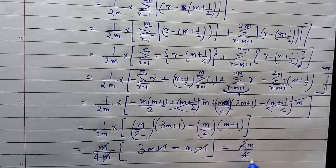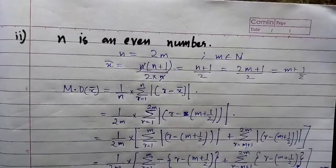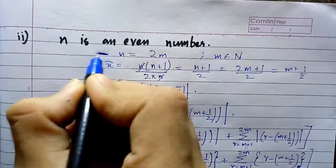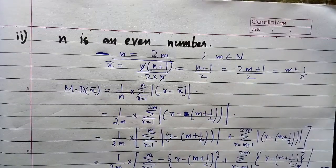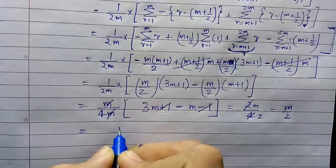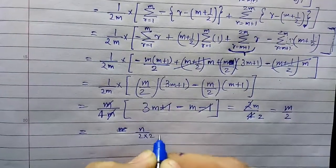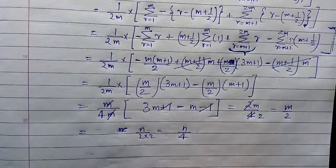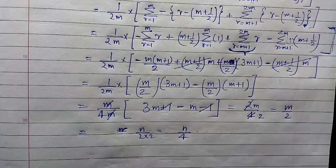What we have got here is 2m cancels to m/2. Again, we must move on. This is an earlier assumption, so m equals n/2. What we have got in terms of n is (n/2) times (2/n), which equals n/4.